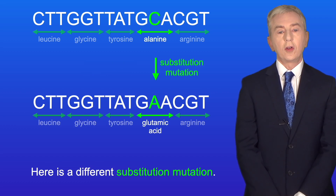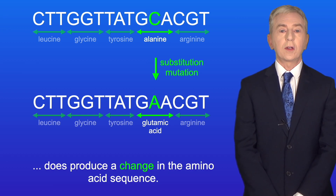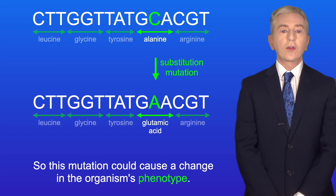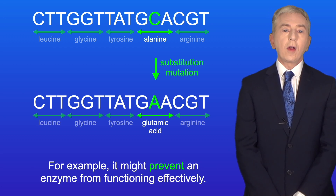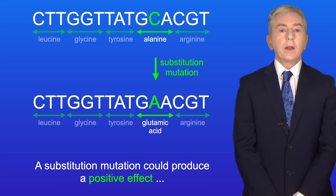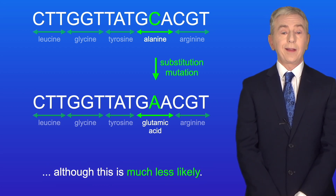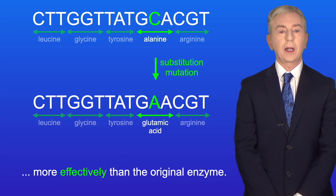Here's a different substitution mutation. This substitution mutation does produce a change in the amino acid sequence, so this mutation could cause a change in the organism's phenotype. This could produce a negative effect on the organism — for example, it might prevent an enzyme from functioning effectively. A substitution mutation could produce a positive effect, although this is much less likely. For example, it may produce an enzyme which catalyzes the reaction more effectively than the original enzyme.